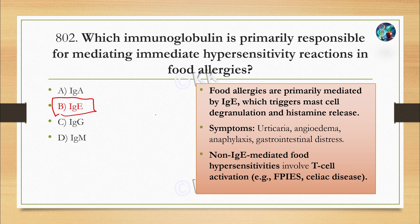Food allergies, or any allergy in our body, are primarily mediated by IgE. This triggers mast cell degranulation and histamine release, which leads to conditions like urticaria, angioedema, anaphylaxis, and gastrointestinal distress. There are also non-IgE mediated food hypersensitivities, in which T-cells are involved. T-cell activation causes allergies — examples include FPIES, celiac disease, etc.